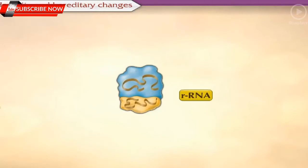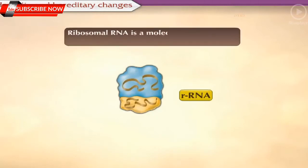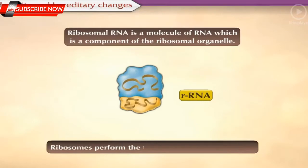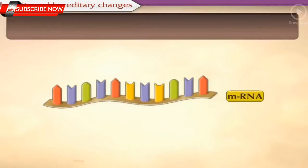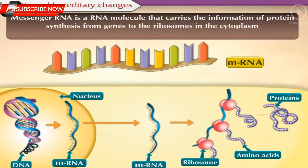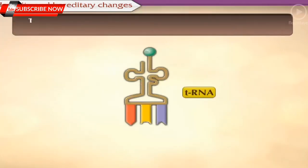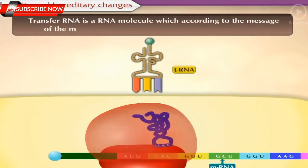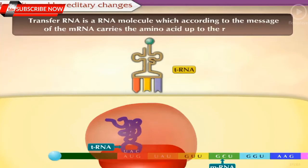rRNA, that is ribosomal RNA, is a molecule of RNA which is a component of the ribosomal organelle. Ribosomes perform the function of protein synthesis. mRNA, that is messenger RNA, is an RNA molecule that carries the information of protein synthesis from genes to the ribosomes in the cytoplasm which produce the proteins. tRNA, that is transfer RNA, is an RNA molecule which, according to the message of the mRNA, carries the amino acid up to the ribosomes.